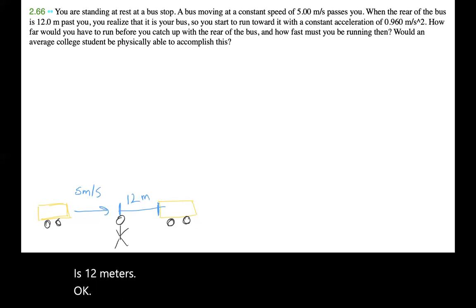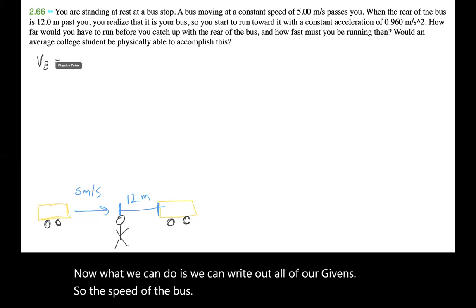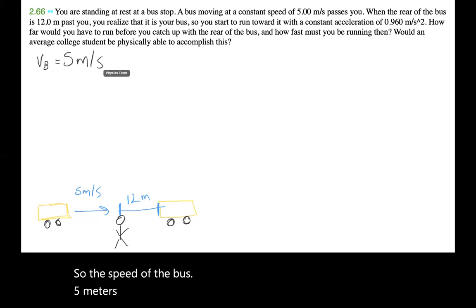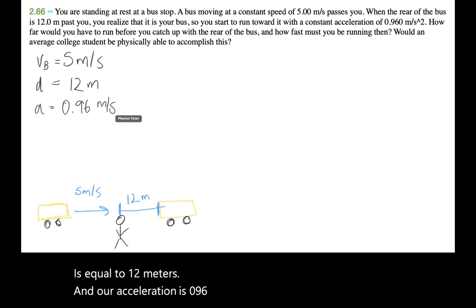Okay, now what we can do is we can write out all of our givens. So the speed of the bus is five meters per second. The distance from us to the rear of the bus is 12 meters. We're just going to call this distance, d equals 12 meters. And our acceleration is 0.96 meters per second squared.